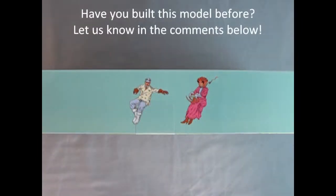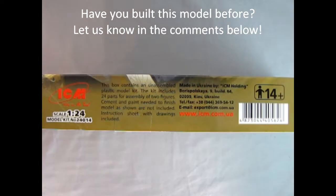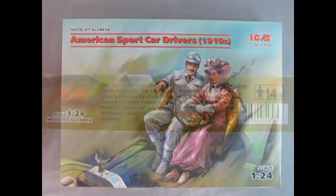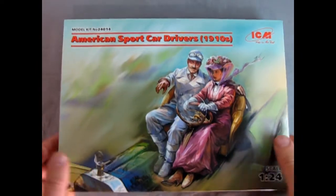The top of the box shows our two figures in a smaller size. You can see the man with the white coat and the blue pants and the woman with the pink dress. ICM gives us this wonderful model in 1/24th scale. For ages 14 up, you will need paint and glue to get it all built. So now we'll take the lid off the box.